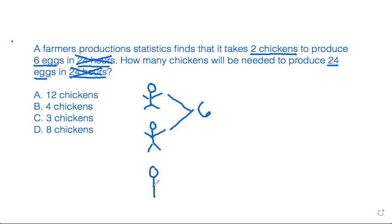So one chicken—and of course my lovely stick figure here is a chicken—produces three eggs. If each chicken produces three eggs, how many chickens do we need to produce 24 eggs?